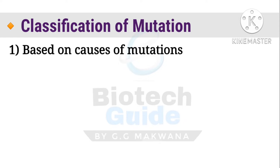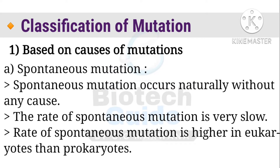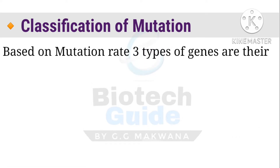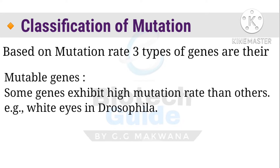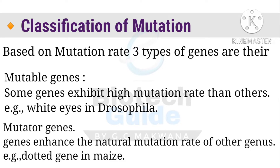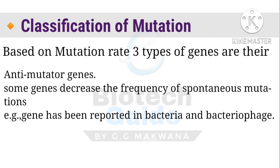The first classification is based on causes of mutation, which gives two types: spontaneous mutation and induced mutation. Spontaneous mutation occurs naturally without any causing agents, and the rate is very slow — higher in eukaryotes than prokaryotes. One important term here is mutation rate, defined by comparison of genes which enhance mutation. There are three types: mutable genes (higher mutation rate, e.g., white eyes in Drosophila), mutator genes (enhance natural mutation rate of other genes, e.g., dotted genes in maize), and anti-mutator genes (decrease frequency of spontaneous mutation, reported in bacteria and bacteriophage).